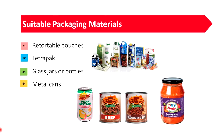Let's see what are the suitable packaging materials for heat sterilization. They are retortable pouches, tetra packs, glass jars or bottles, and metal cans.